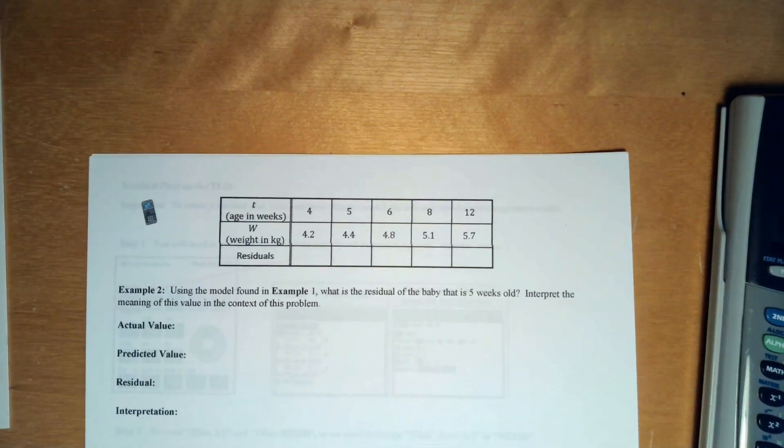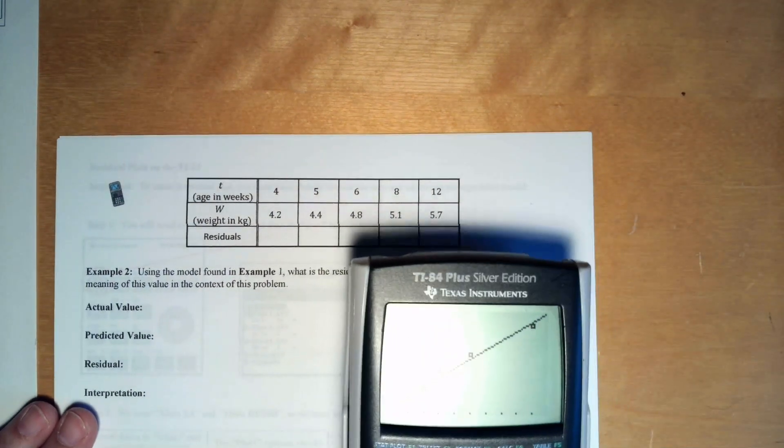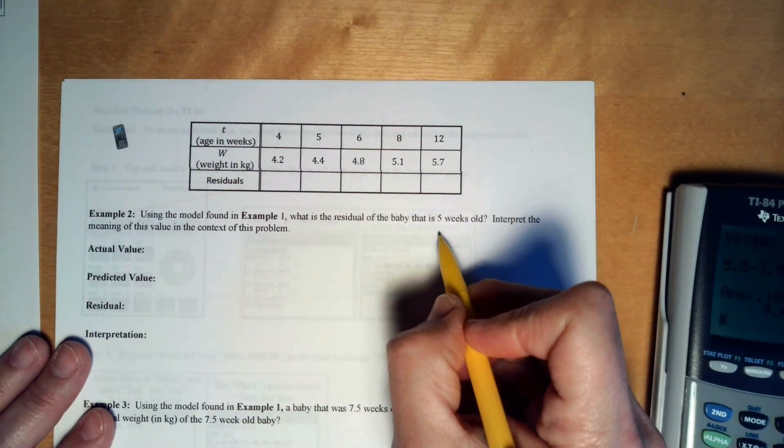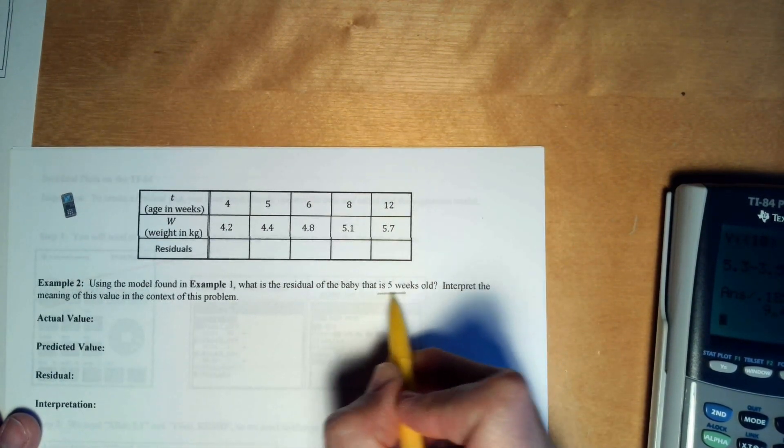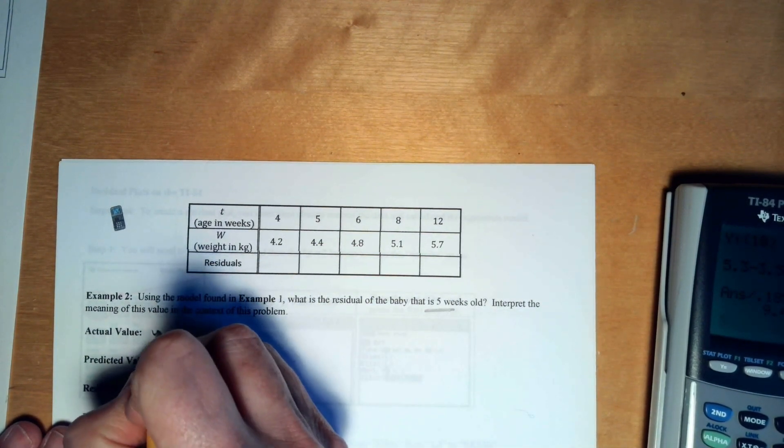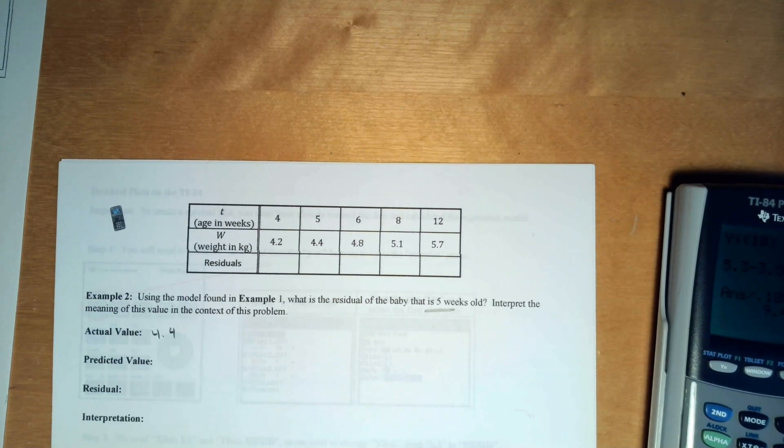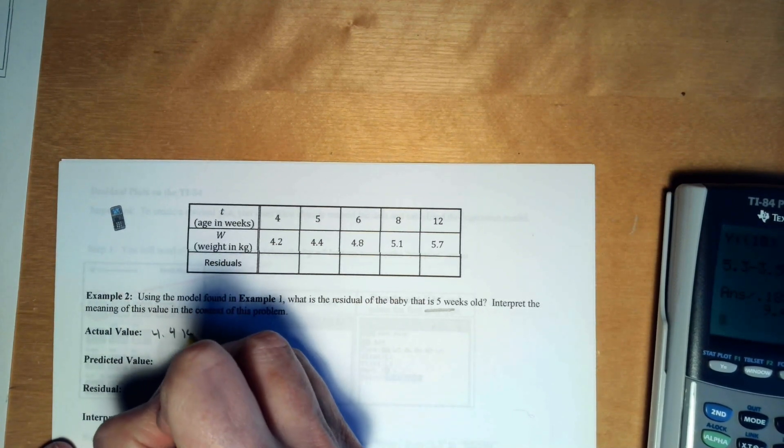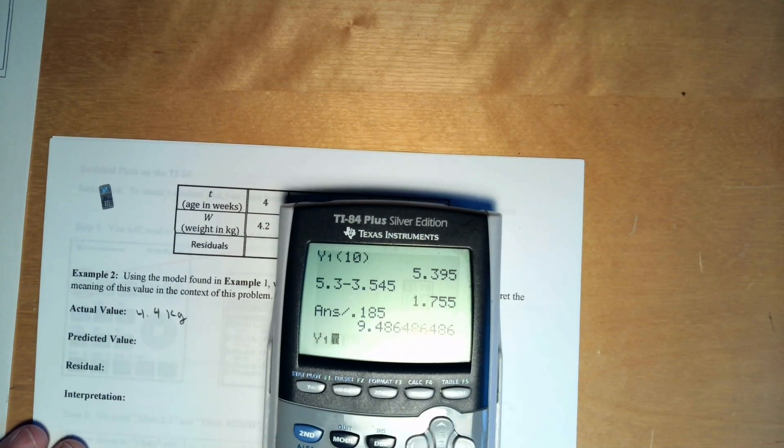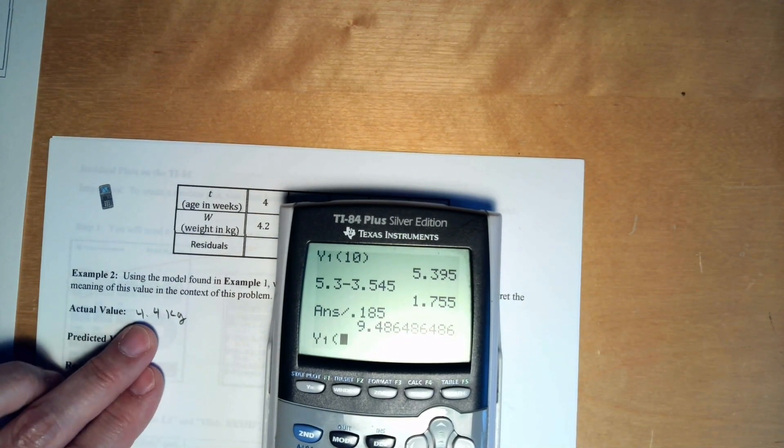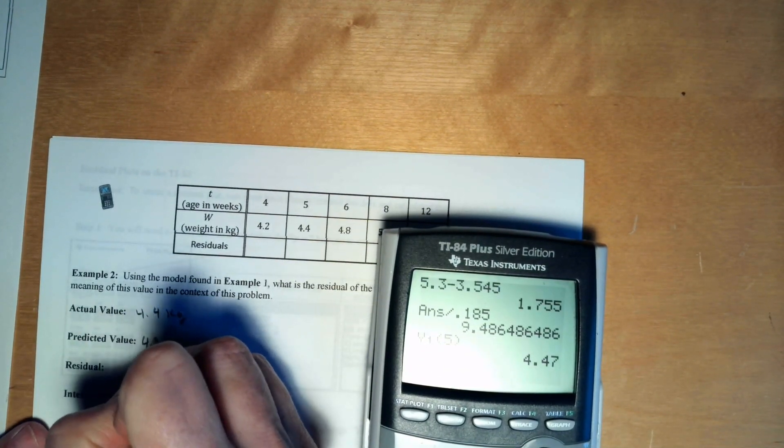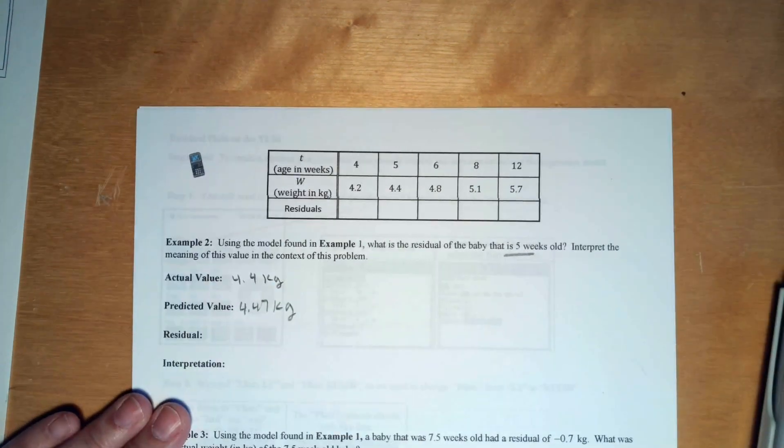So we want our actual value. Our actual value is literally the thing that we use, our data. And then we would subtract off what the model tells us we are at that number. So we're going to do that over here. So let's just do a couple of these. I'm going to show you how you can do this on your calculator. So right now, we're going to try to do this for five weeks old. So the actual value of five weeks old is 4.4 kilograms. And the predicted value. So I need that for my calculator. So I need Y1 of 5 is 4.47.